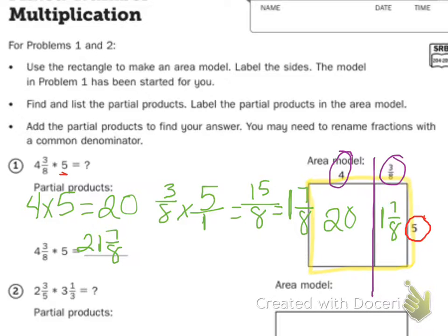Your next one is 2 and 3 fifths times 3 and 1 third. This one is going to be a little trickier, but my hint to you is you're going to need to break your box up into 4 parts. And you'll have 1, 2, 3, 4 partial products to add together.